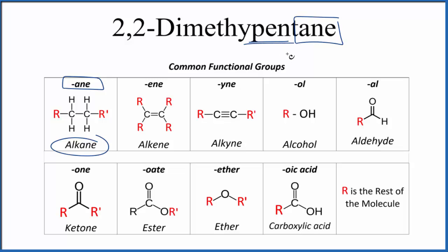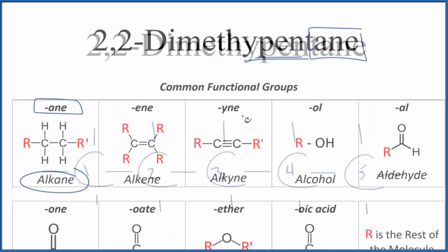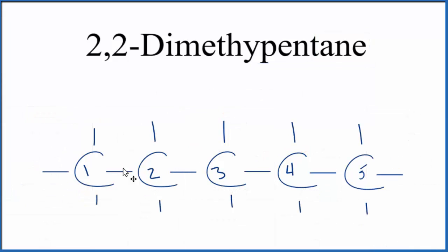Pent means five, so we're going to have five carbon atoms, all single bonded and surrounded by hydrogen. Let's put a chain up with five carbon atoms. So right now we just have pentane — five carbon atoms, all single bonds.